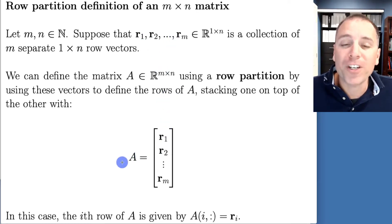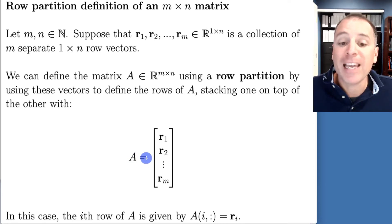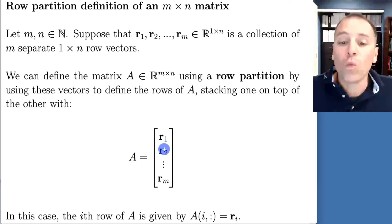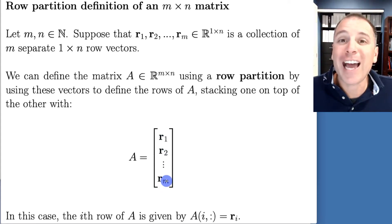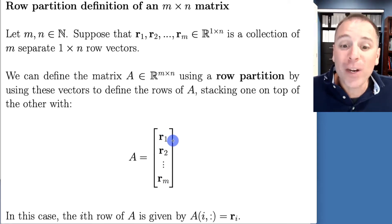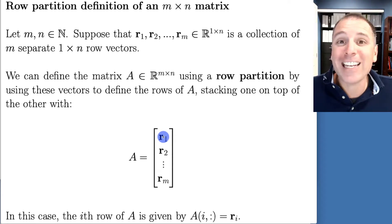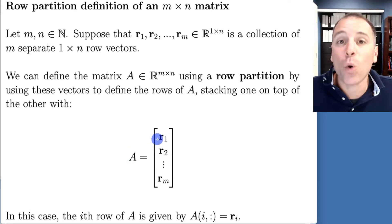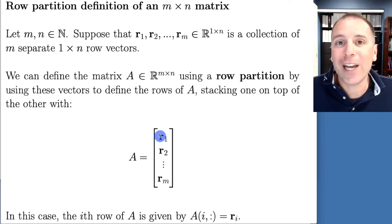The row partition definition of a matrix is given by row one, row two, all the way down to row M, where each of these rows has identical dimensions of one row and N columns. Notice we actually have to define each of those rows entry-by-entry, but once we've done so, we think about A as organized by rows rather than individual entries.